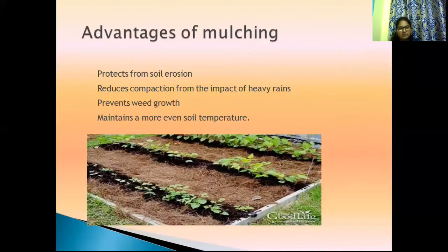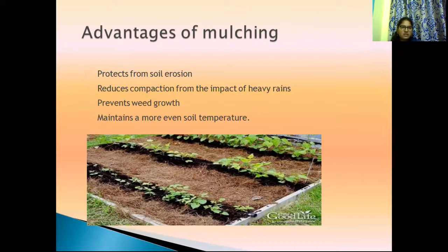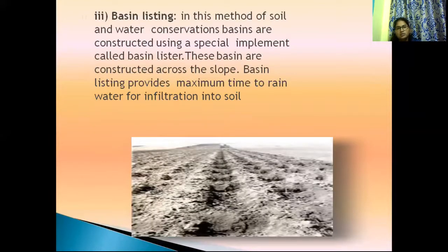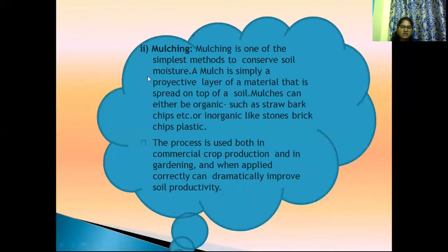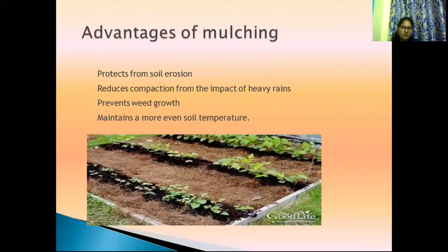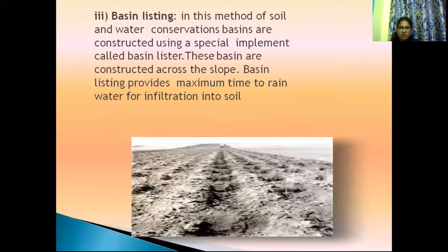The advantages of mulching include reducing compaction from the impact of heavy rains, preventing weed growth, and maintaining more even soil moisture. Also, basin listing. These are the different in-situ techniques: deep tillage, mulching, and basin listing.